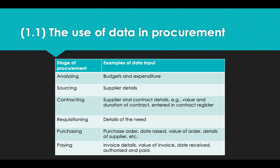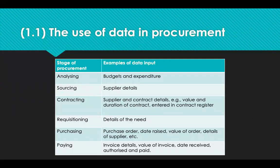Data is input into systems throughout the procurement cycle — when budgets are set, when requisitions and purchase orders are raised, when stock is moved either internally or externally, when invoices are received, approved and paid. That data can be analysed to provide evidence of key decisions such as determining order quantities, calculating lead times, and monitoring expenditure against budgets.